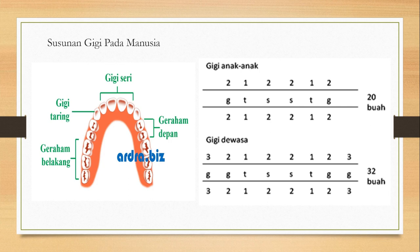Perhatikan gambar yang ditampilkan berikut ini. Di sini terdapat beberapa jenis gigi manusia serta susunannya. Yang pertama yaitu gigi seri, berfungsi untuk memotong makanan. Yang kedua ada gigi taring, berfungsi untuk mengoyak makanan. Dan yang ketiga ada gigi geraham, yang terdiri dari geraham depan dan geraham belakang, fungsinya sama yaitu untuk menghaluskan makanan.